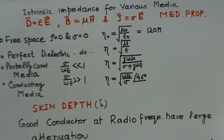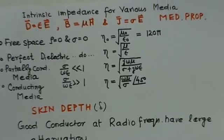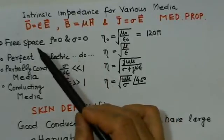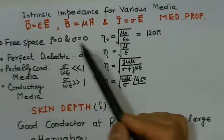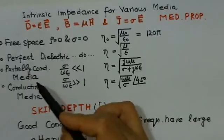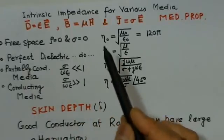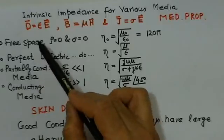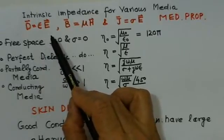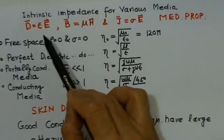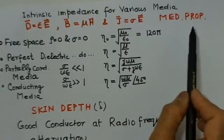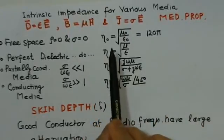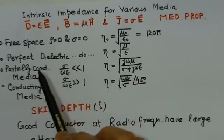If we take different media - free space, perfect dielectric media, partially conducting media, and conducting media - propagation depends on various media parameters. The medium properties are D = εE, B = μH, and J = σE. Depending upon these medium properties, you get propagation in different media.